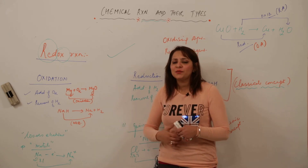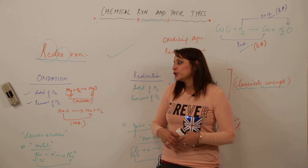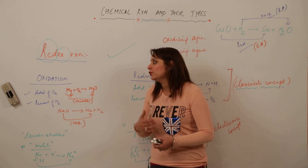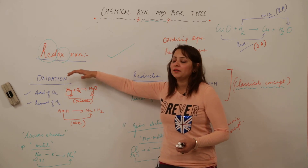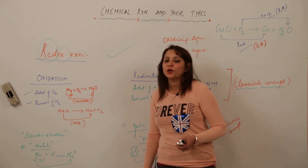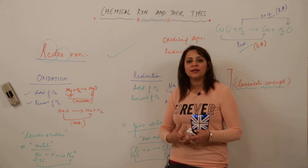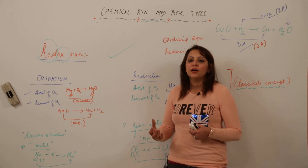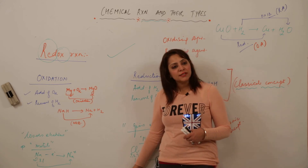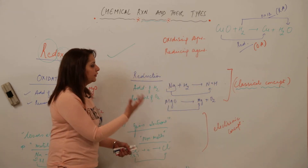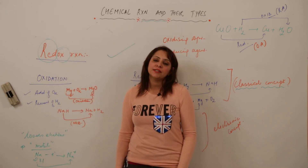We have a few more examples of redox reactions which will be taken up in the next units. For now, you should know what a redox reaction is — how oxidation and reduction occur simultaneously, how the oxidizing agent acts, and how the reducing agent gets affected. This is how we can identify reducing and oxidizing agents and formulate redox reactions.